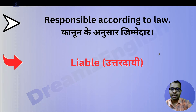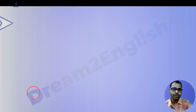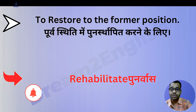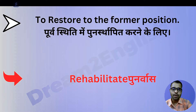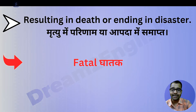Next one is responsible according to law — kanun ke anusar jimmedar — this is called 'liable'. Next one is rehabilitate — punarvas. Next one is resulting in death or ending in disaster — mrityu mein parinam ya aapda mein samapt.